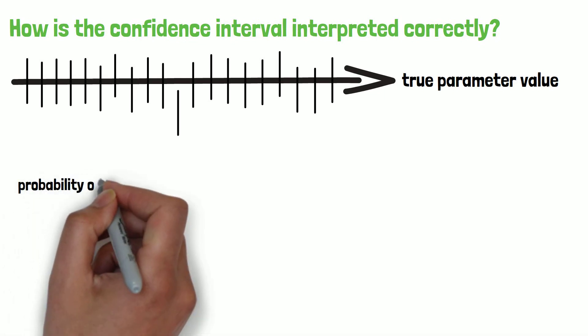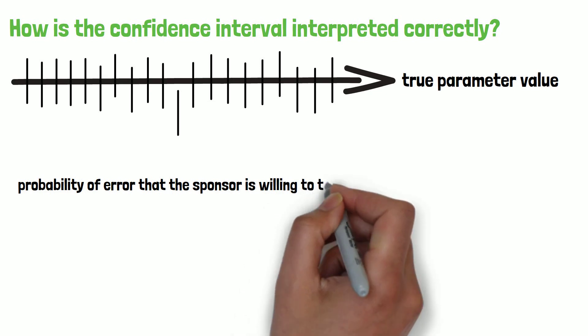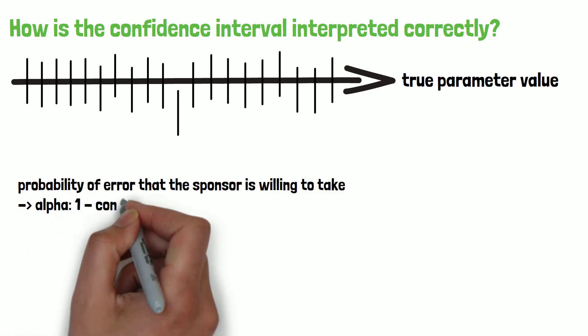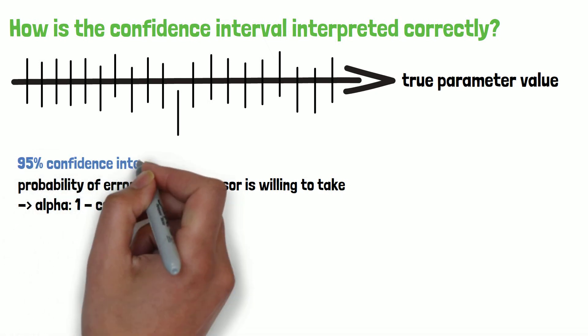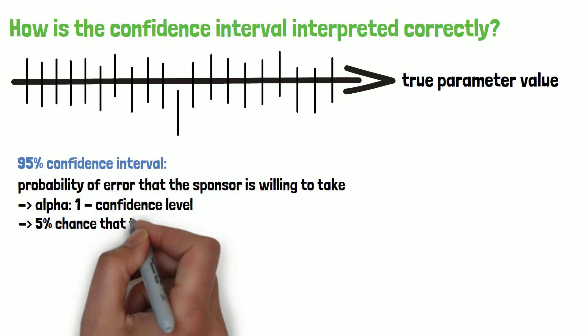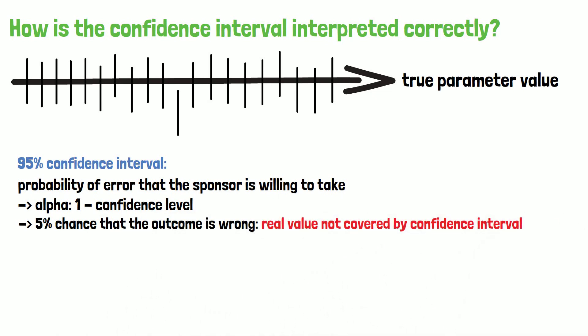The confidence level is also reflecting the probability of error that the sponsor is willing to take in return, also called alpha, which can simply be calculated by 1 minus the confidence level. In case of the 95% confidence interval, that would mean there is a 5% chance that the outcome is wrong and the real value is not covered by the interval.